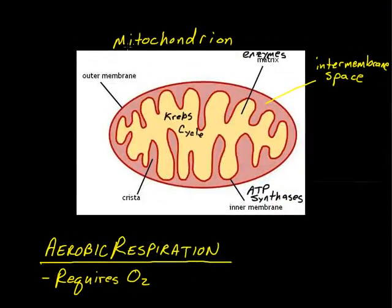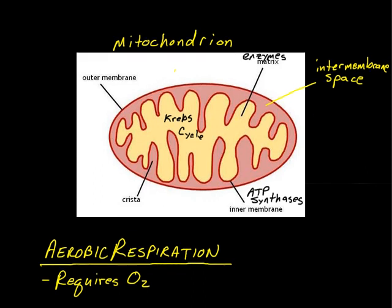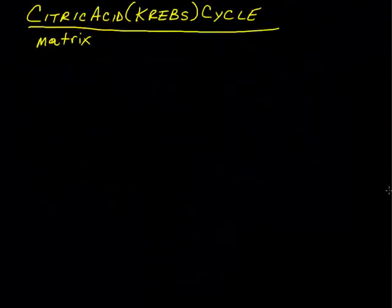So, glycolysis occurs out here in the cytoplasm. Krebs cycle occurs in here. So, pyruvate, sugar gets turned into pyruvate. The pyruvate gets transported into the matrix, so the rest of respiration can occur.